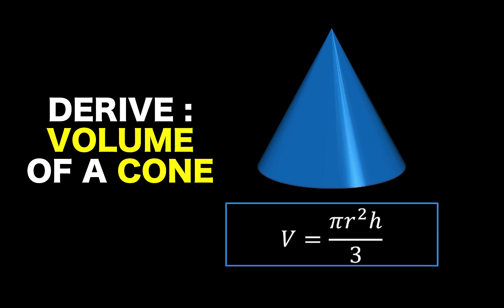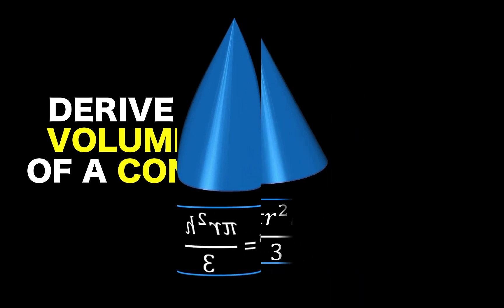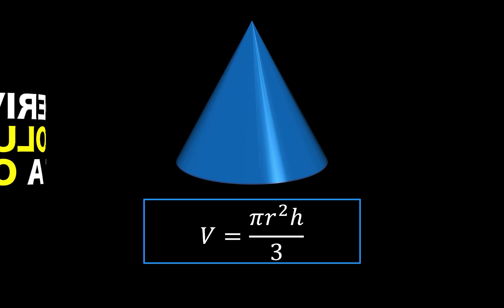In this video, we are going to answer one important question: Where in the world does this formula for the volume of a cone, π r² h over 3, come from?